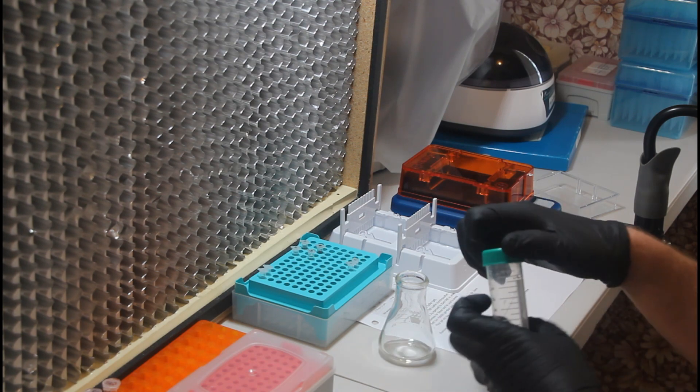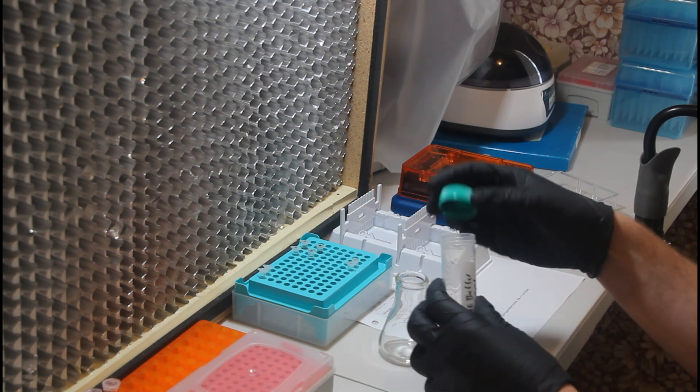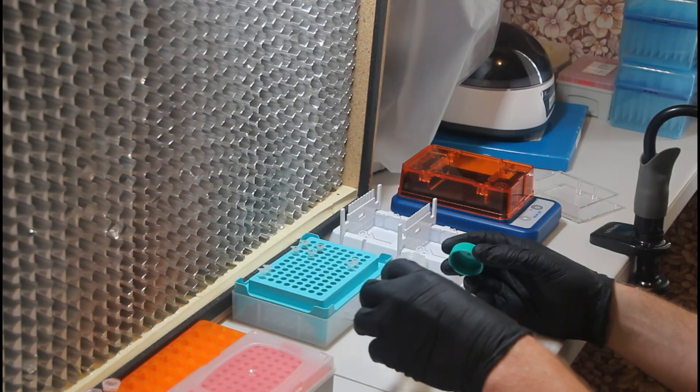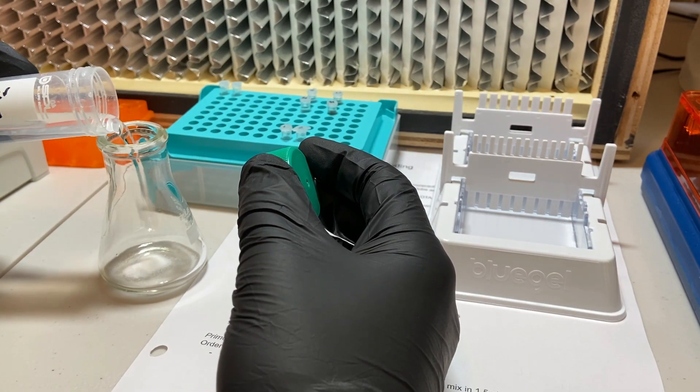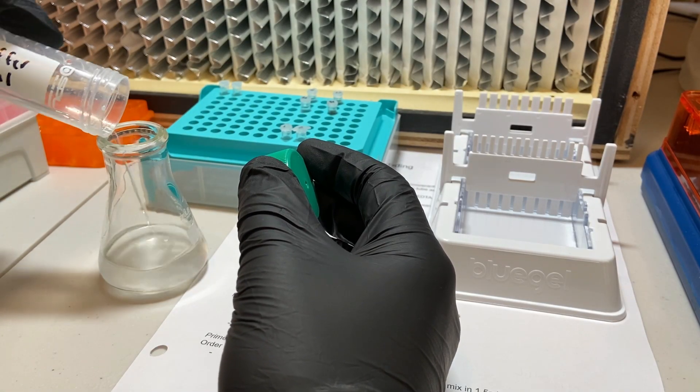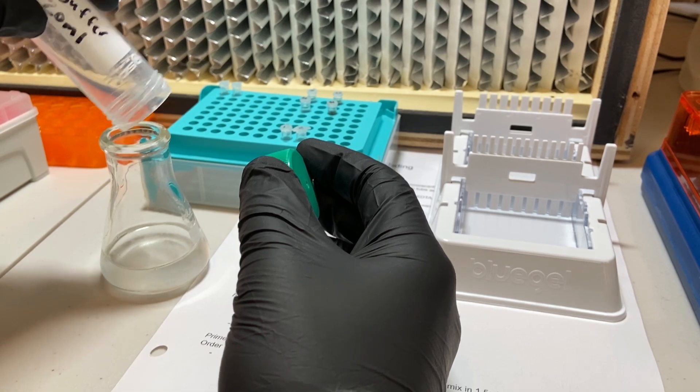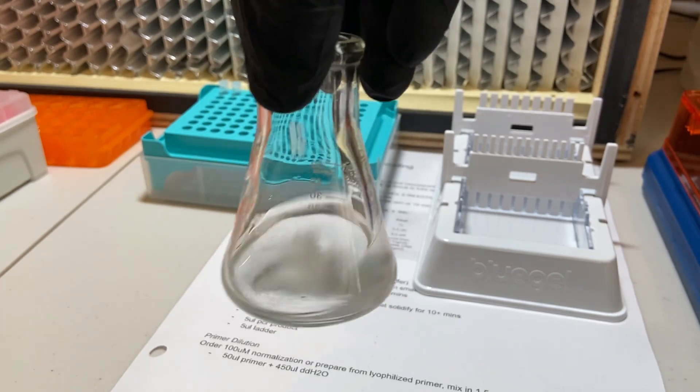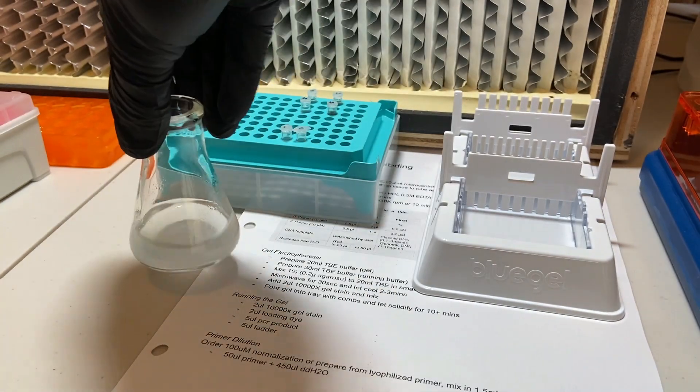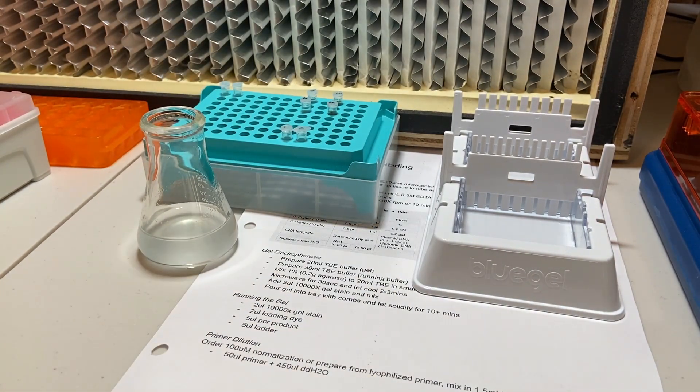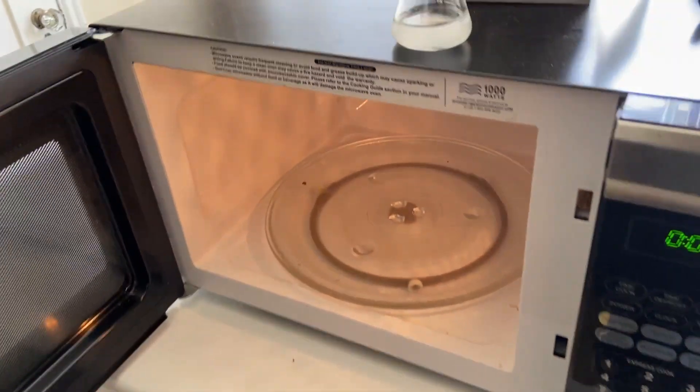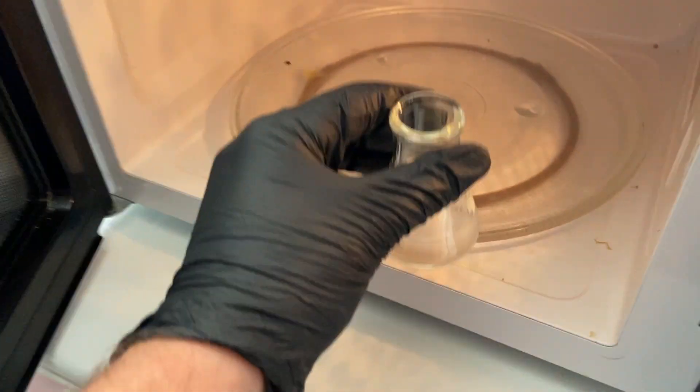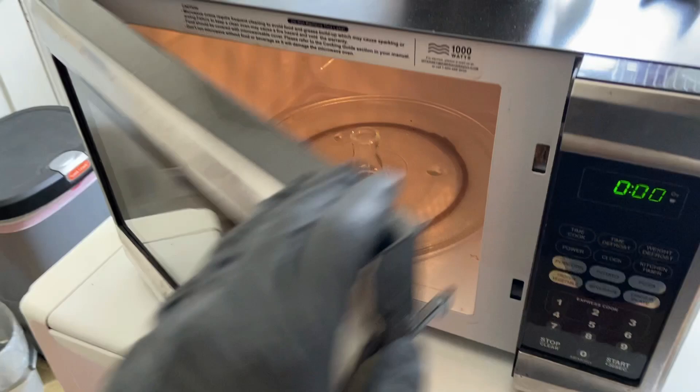So after you've added the agarose to a small flask, we're now going to mix in the 20 milliliters of 1X TBE buffer. And gently swirl it. Otherwise, you're going to get dry agarose gel up around the edges. And we're going to pop that into the microwave to melt the agarose for 30 seconds.